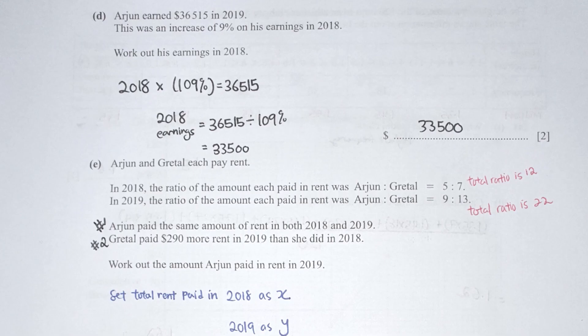For question D, 2018 times 109% should be 36,515. To find the original amount, simply take 36,515 divided by 109%, which gives 33,500.